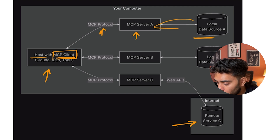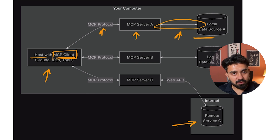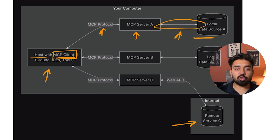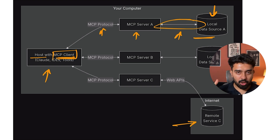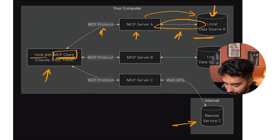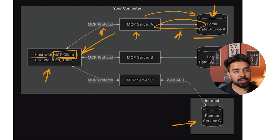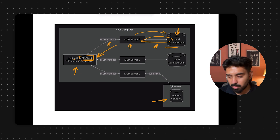We are able to provide this connection between our local source, local database, local service — anything. It could simply be a file system, or a Notion database available on your local machine. The server can then securely access this service and provide context to our host application, which will be able to understand everything and do whatever you ask it to do.